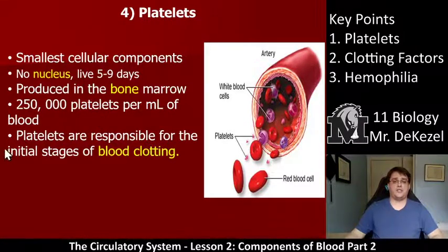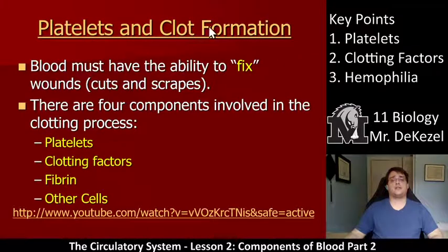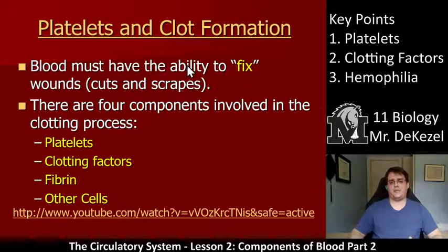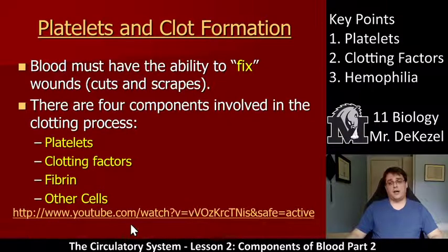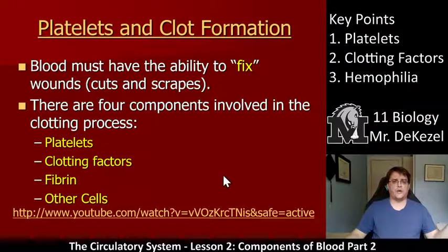Platelets are responsible for the initial stages of blood clotting, and their spiky nature is very helpful for that. Blood must have the ability to fix wounds — wounds are made when blood vessels are opened. There are four components involved in the clotting process: platelets, clotting factors, fibrin, and then other cells. Check out the animation video for a visual explanation of how this all works.